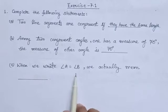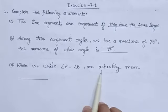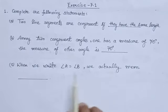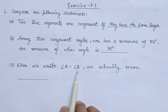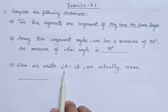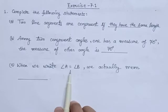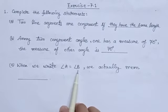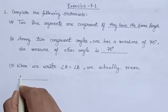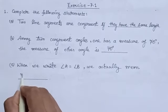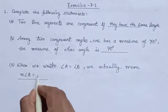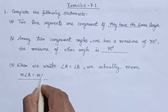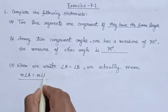When we write angle A equals angle B, then we actually mean: the measure of angle A equals the measure of angle B. Hence, we can write here: measure of angle A equals measure of angle B.